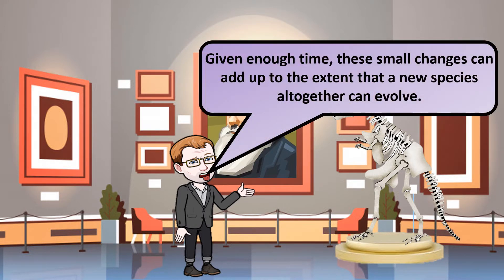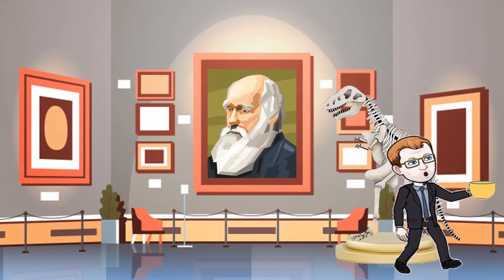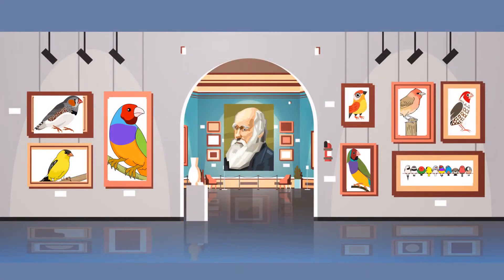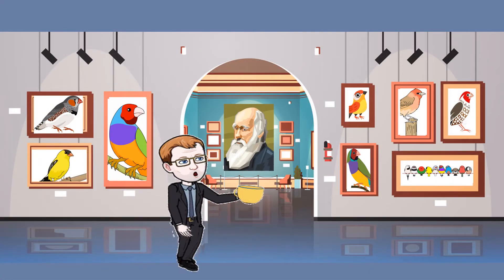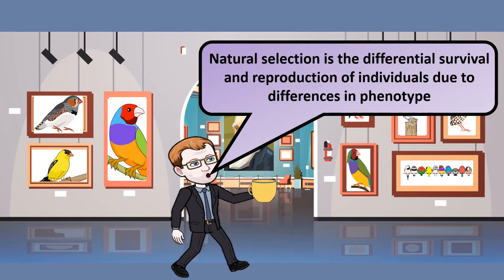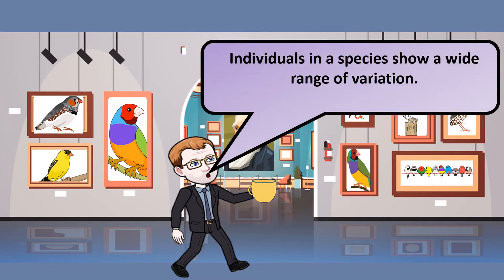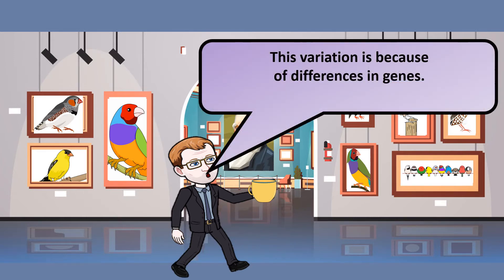Given enough time, small changes within a species can add up to the extent that a new species evolves. Natural selection is the differential survival and reproduction of individuals due to differences in phenotype — phenotype being the way that something looks. Individuals in a species show a wide range of variation, meaning they show different characteristics and look slightly different from each other.